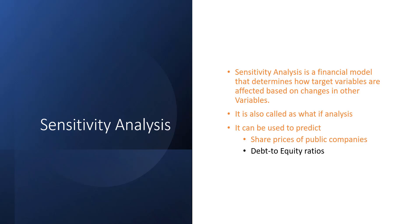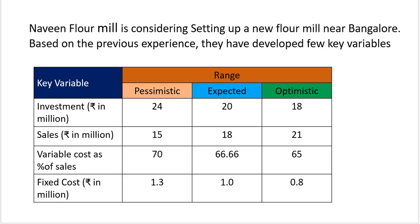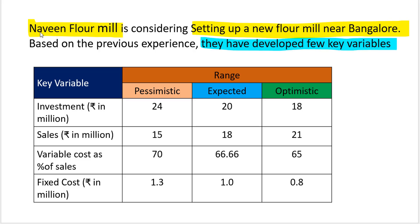Let's check in how to do this sensitivity analysis. Let's consider an example. There is an organization called Nubin Flow Mill who is interested in setting up a new plant near Bangalore. Based on previous experience, they have developed a few key variables for this project. This project has three important ranges: the pessimistic situation, the expected, and the optimistic situation.